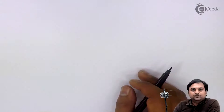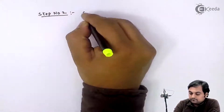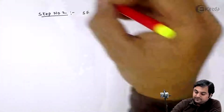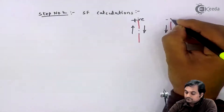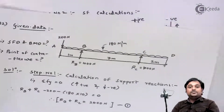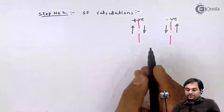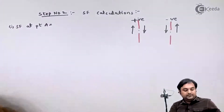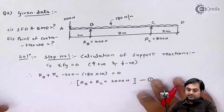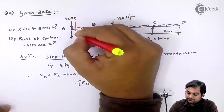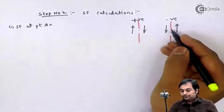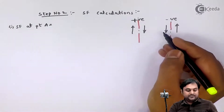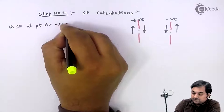Now after completing step number 1, I will go on to step number 2 — shear force calculations. For this I will first draw the sign convention. When calculating shear force, I will first calculate it at point A, taking the section just close to A on the right side. To the left of the section I have 200 Newton acting downward, so for a downward load to the left, the shear force is negative.